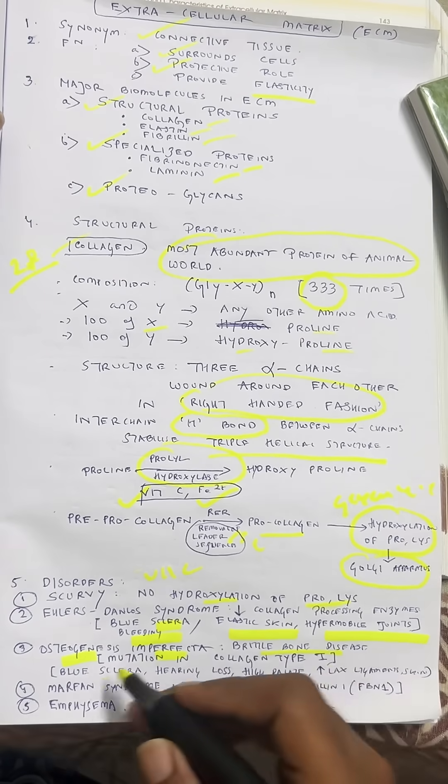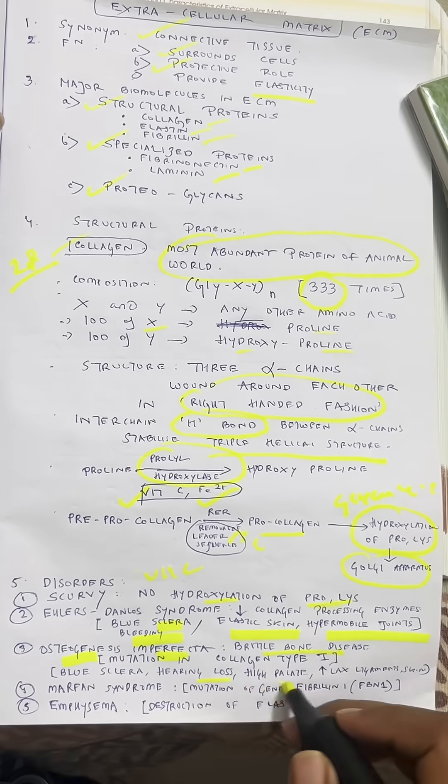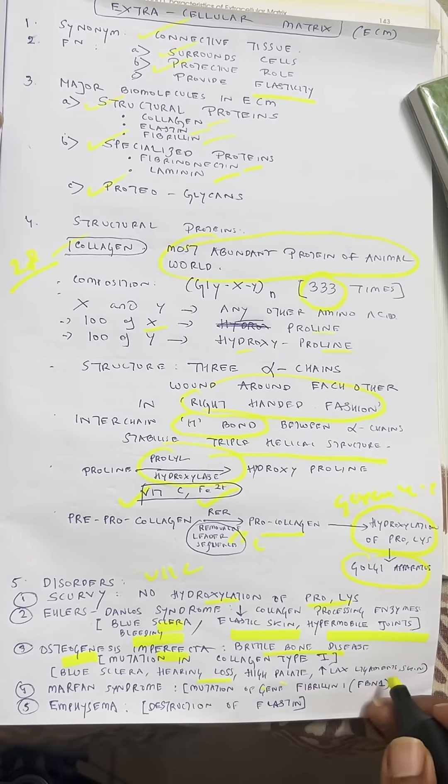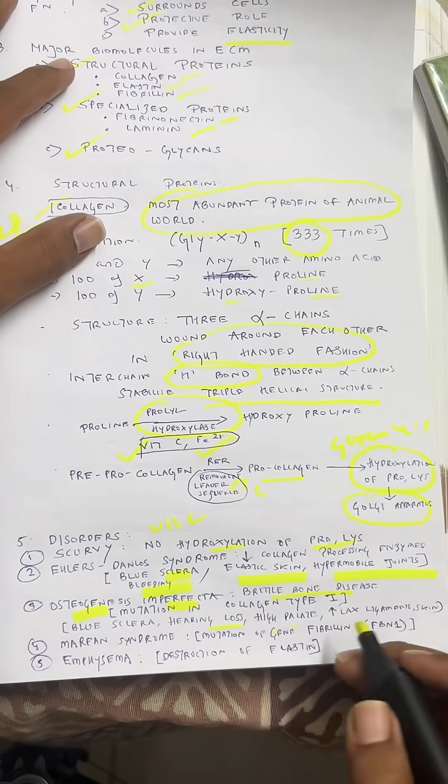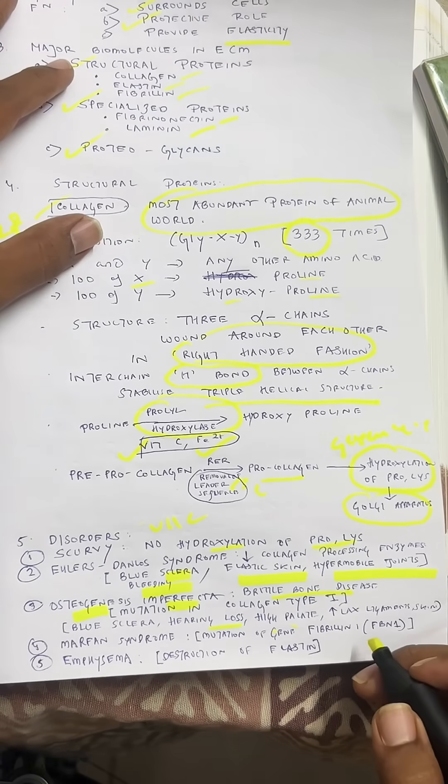Osteogenesis imperfecta presents with recurrent fractures, blue sclera, hearing loss, high arched palate, and hyperlaxity of ligaments and joints. Marfan syndrome is due to mutation of gene fibrillin-1 (FBN1).